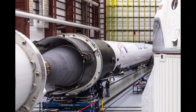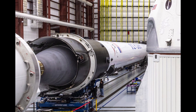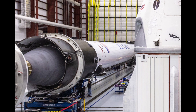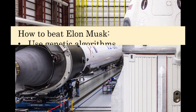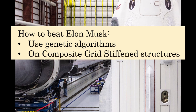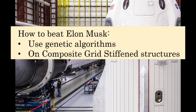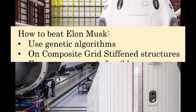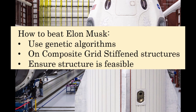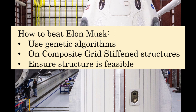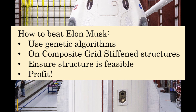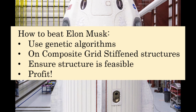Although SpaceX doesn't release information about how they produce their first stages, our hypothesis was that we could use genetic algorithms to optimise a composite grid-stiffened structure to produce a structure that is lighter, feasible to manufacture, and possibly even cheaper than the structure that they use.